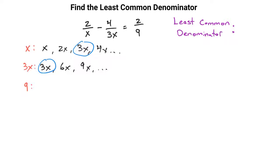However, that's not going to get us to a spot where we will be able to get a 9 because 9 doesn't go into 3x evenly. And that's a key thing about common denominators is that every one of these denominators must go into that common denominator.